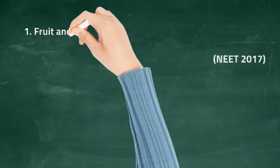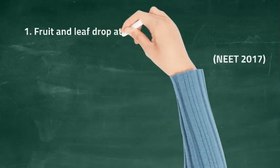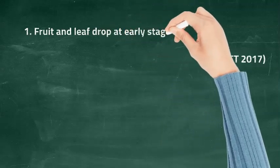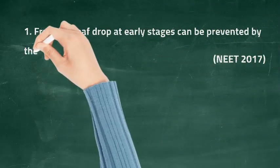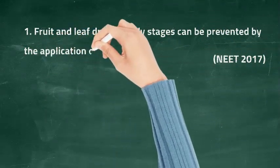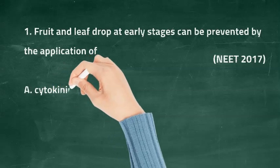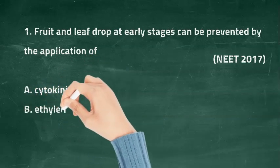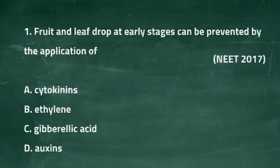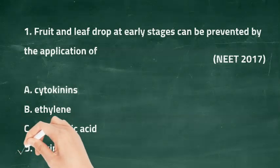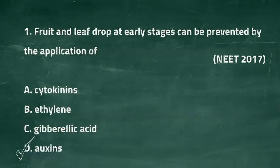The first question is: fruit and leaf drop at early stages can be prevented by the application of — option A: cytokinins, option B: ethylene, option C: gibberellic acid, and option D: auxins. The right answer is option D, auxins.